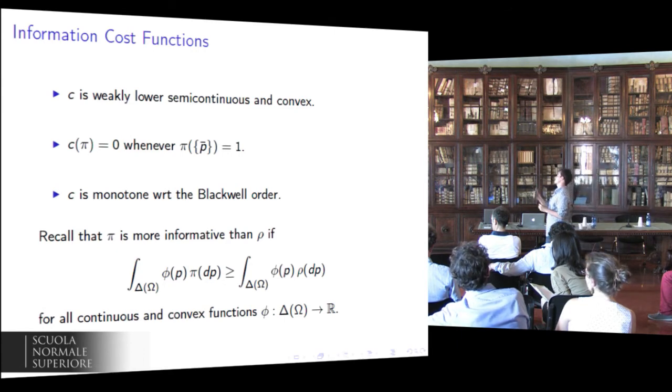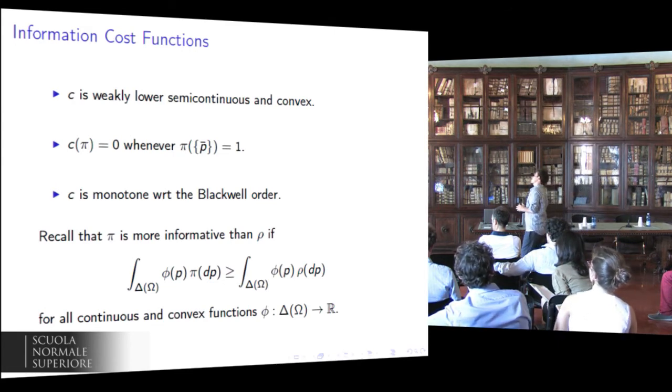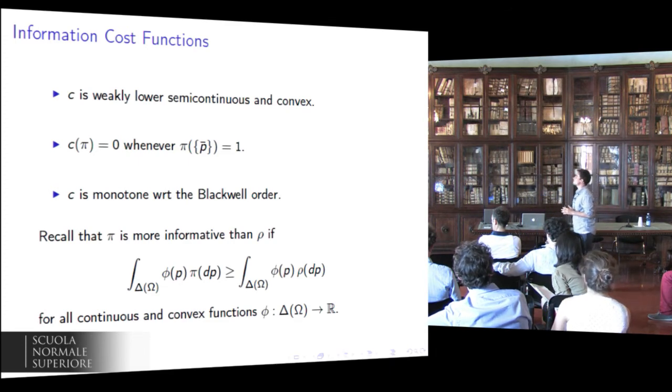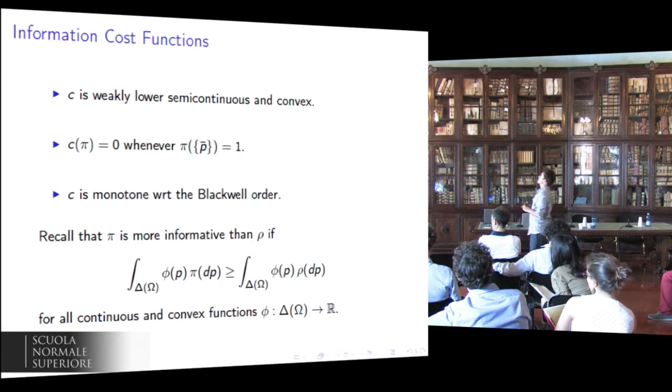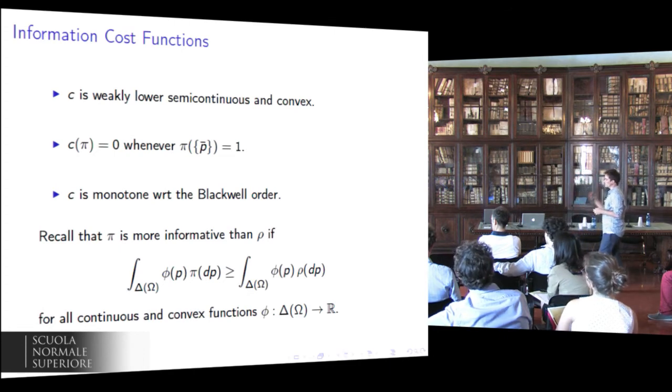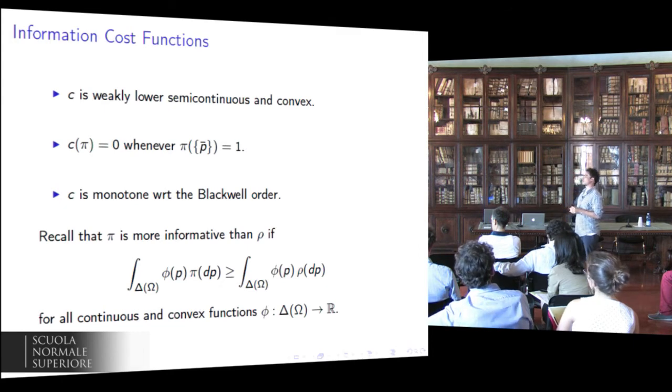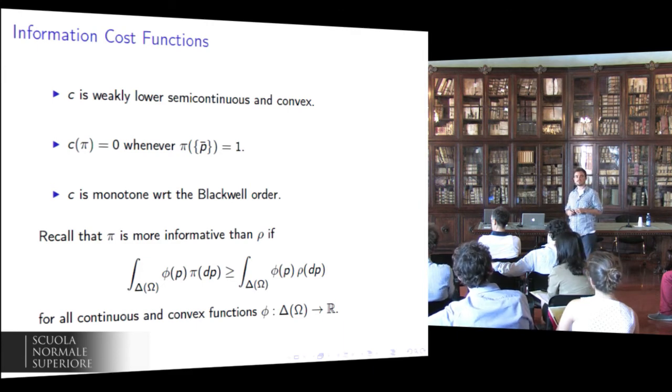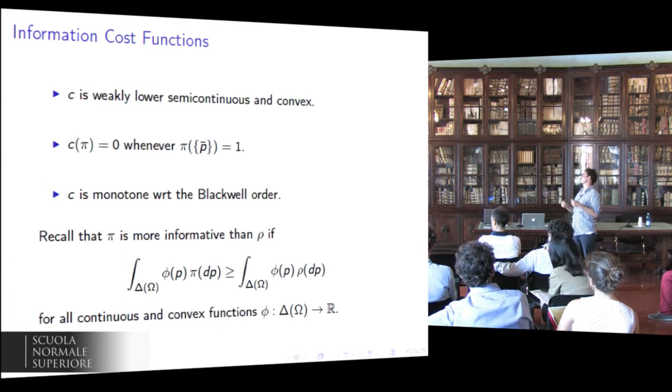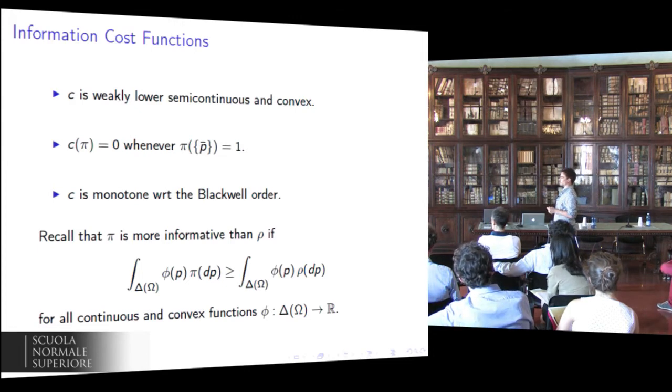Finally, C is monotone with respect to the Blackwell order. It means that channels that are more informative, according to the standard Blackwell's definition of informativeness, are also more expensive. For convenience, let me remind you that according to Blackwell, channel pi is more informative than channel rho if the expected value of phi calculated under pi is greater than the expected value of phi under rho for all continuous and convex function phi mapping posteriors into the real line.